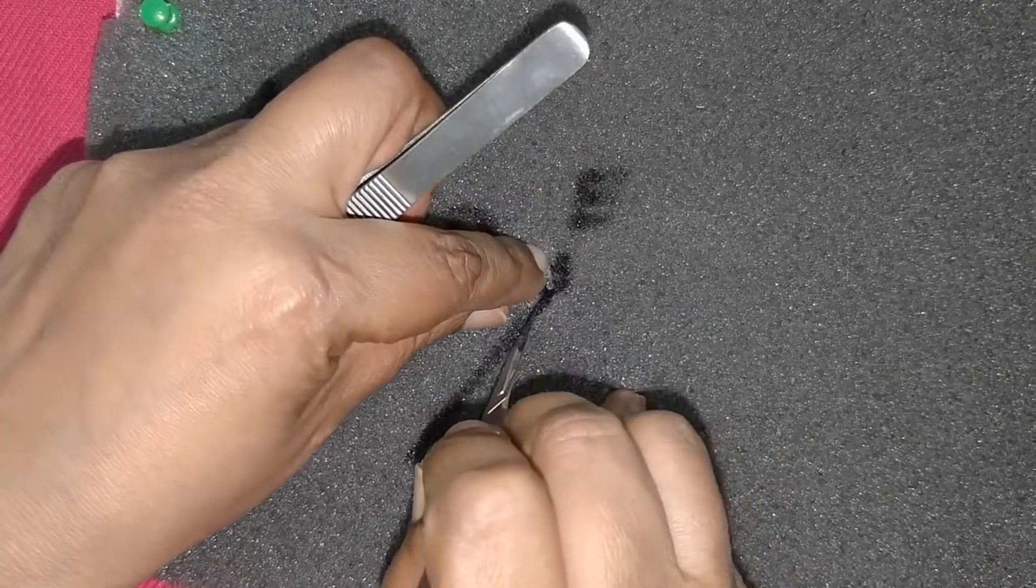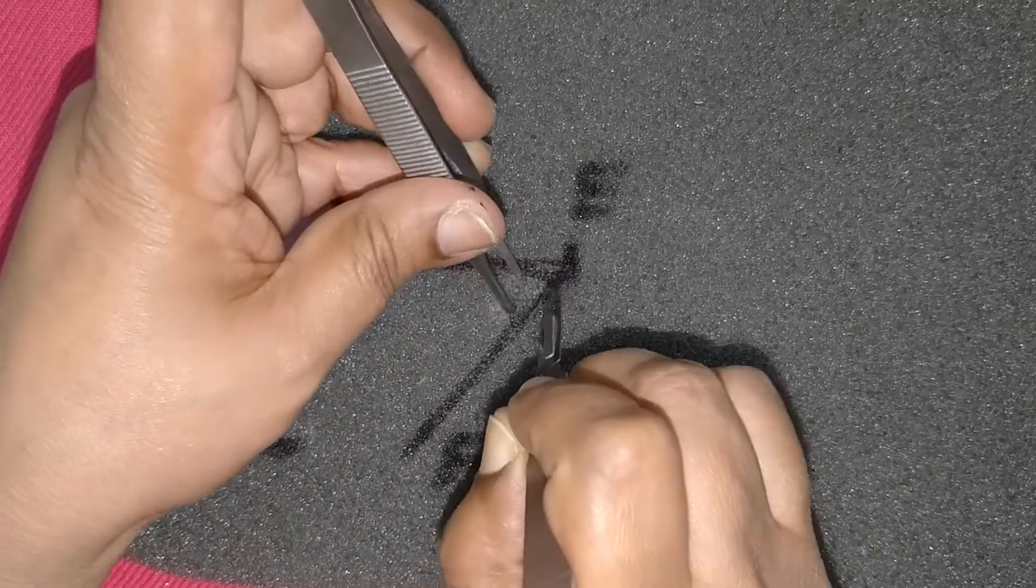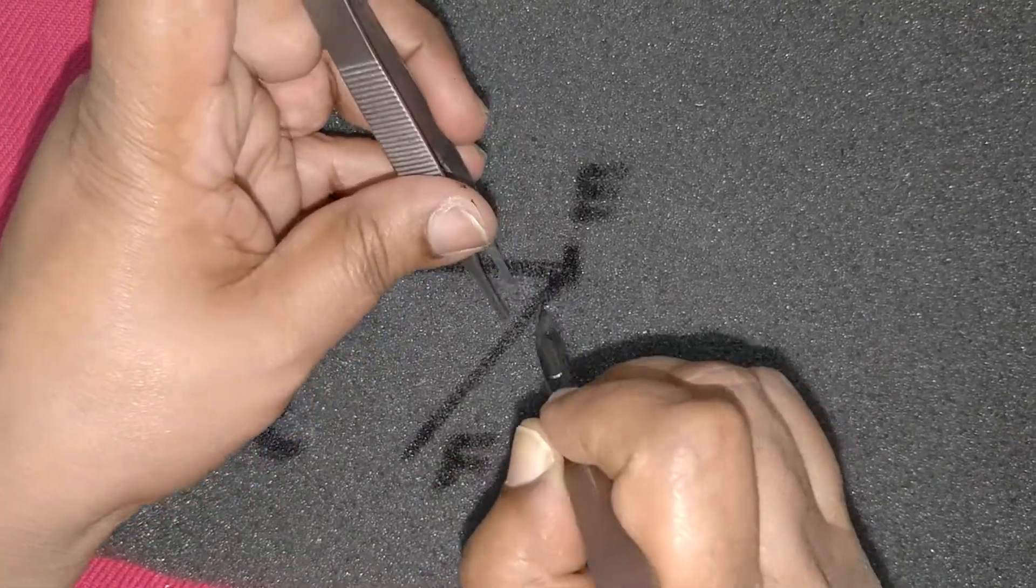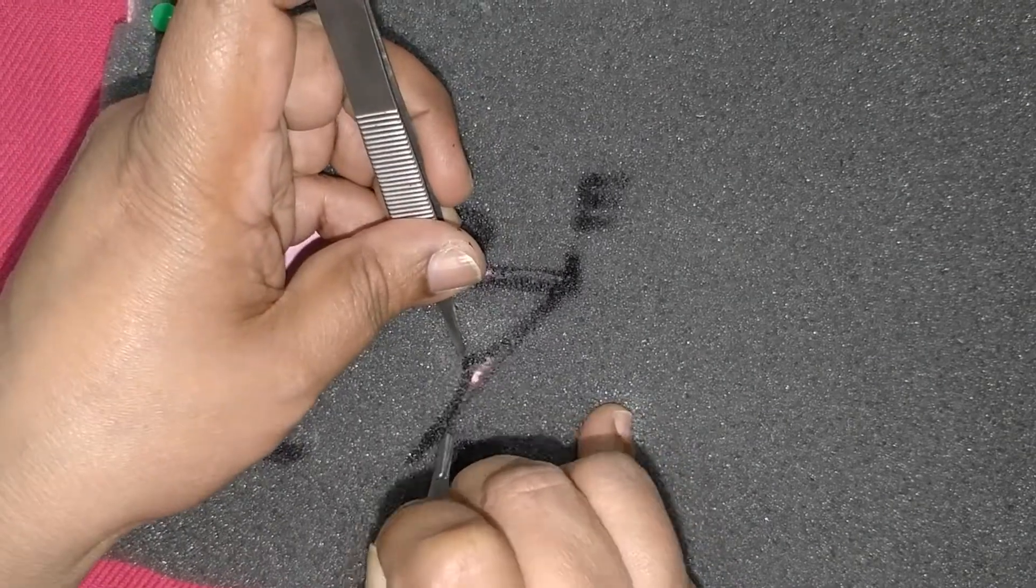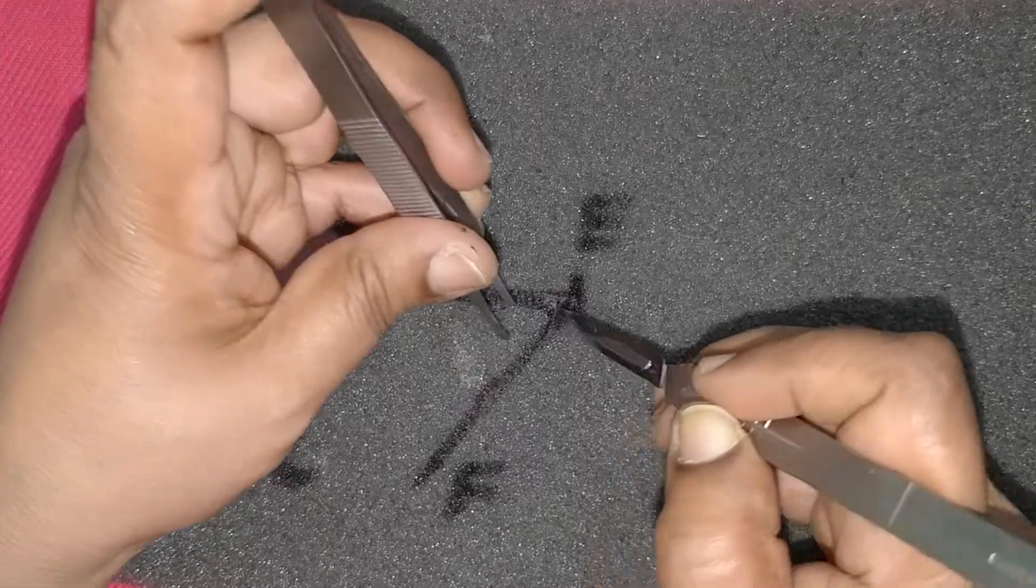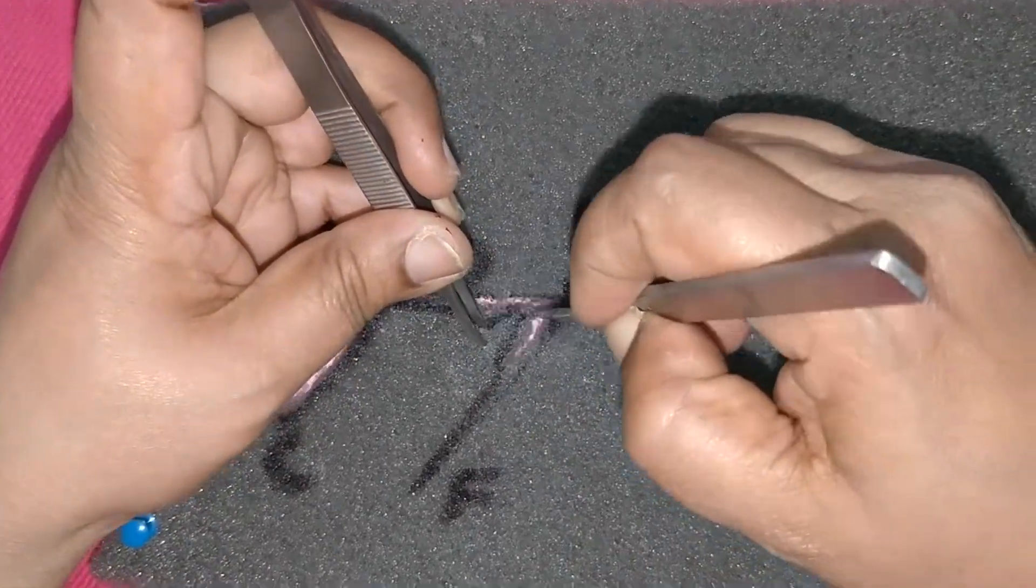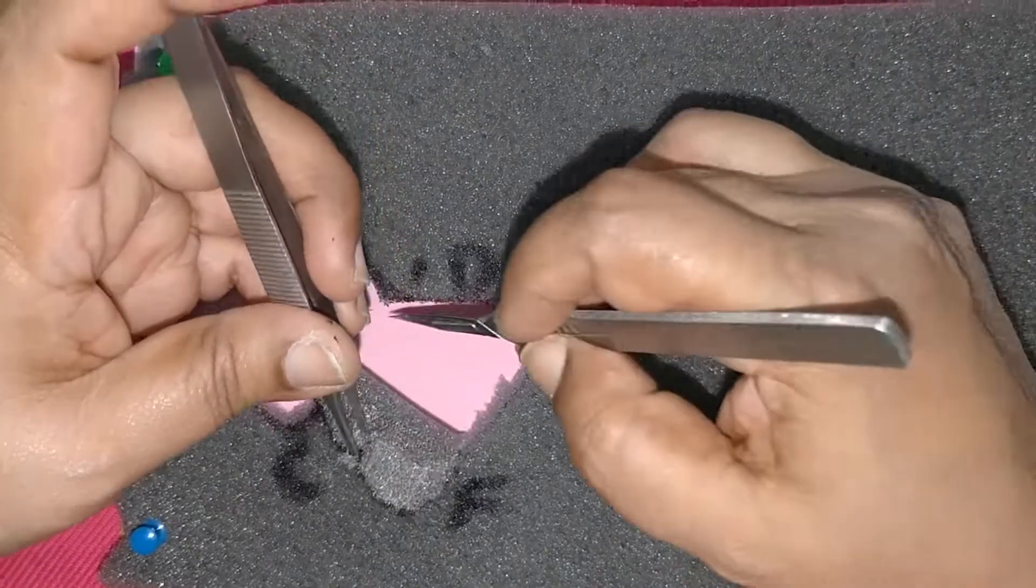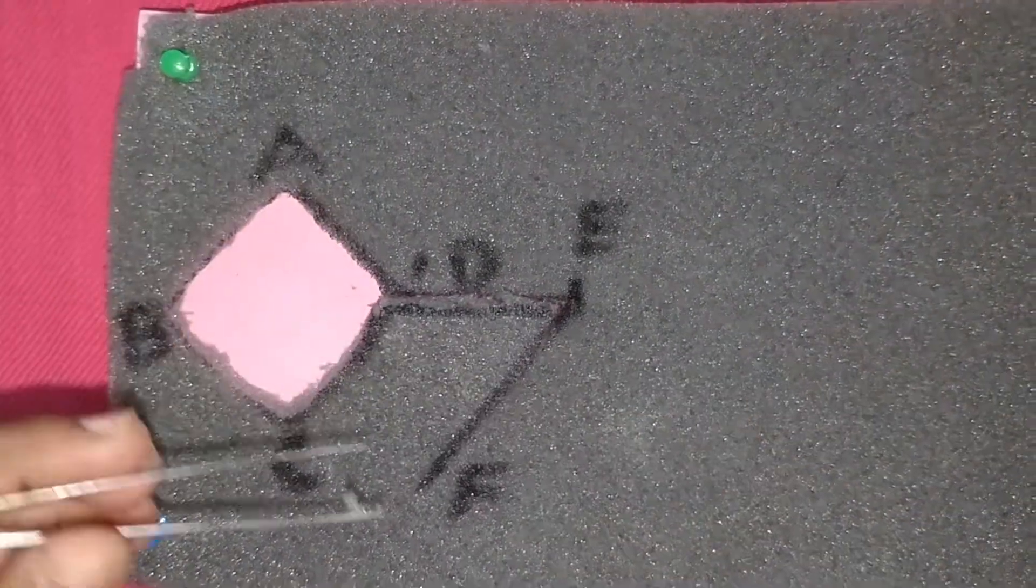The flap is incised. Here the foam is incised. This incision usually goes down to the subcutaneous tissue. Here we have kept a pink background, a thinner layer of foam underneath to show that the appropriate level has been reached.